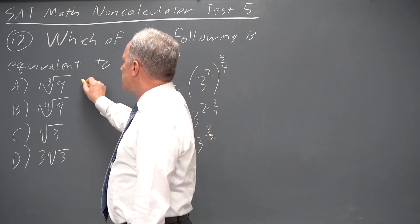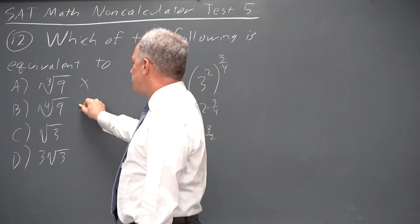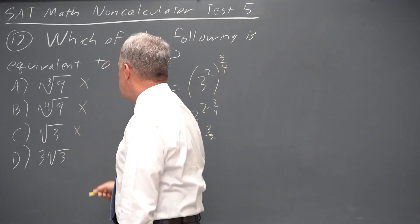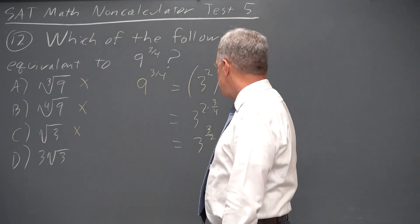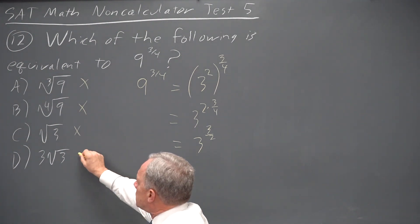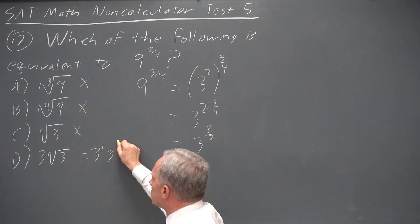And that's definitely not cube root of nine. It's definitely not fourth root of nine. Three to the one-half is square root of three, so it should be choice d, which is three to the one, three to the one-half.